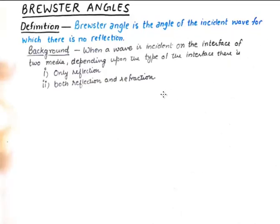A little bit of background here: when a wave is incident on the interface of two media, depending upon the type of the interface, there is either only reflection — which happens when the wave is incident on a perfect conductor — or we could have both reflection and refraction. We want to eliminate reflection from our scenario so that we can find out the Brewster Angle for a particular incident wave.